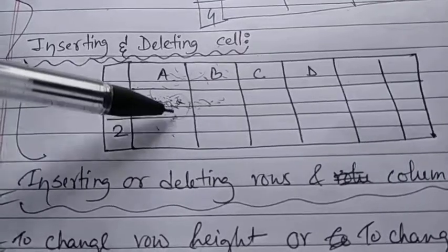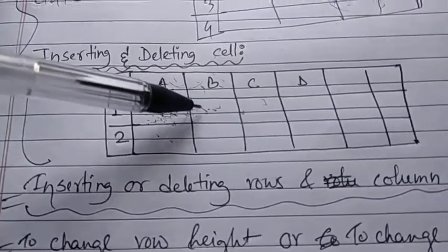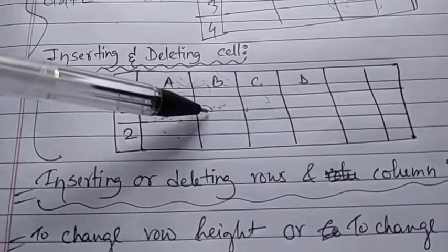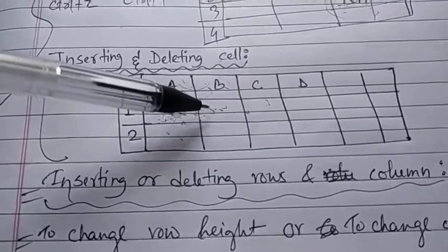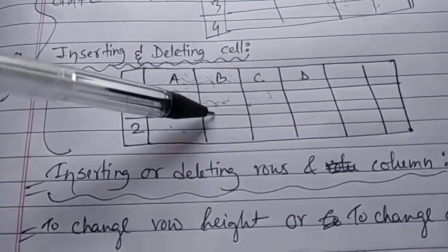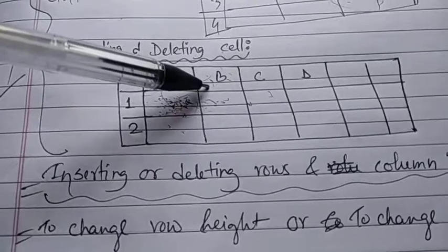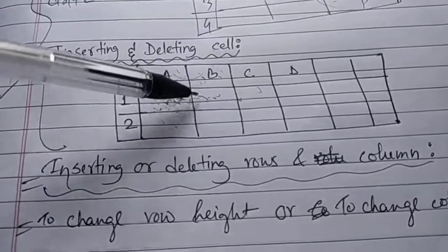A pop-up menu will be displayed. From that pop-up menu, click on row above or row below. If you click on row above, a new row will be inserted just above row one. If you select row below, after row number one a new row will get inserted.